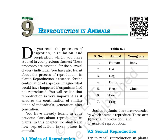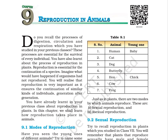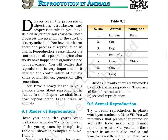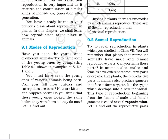Audiobook Science, Class 8, Page 100. Chapter 9: Reproduction in Animals. Do you recall the processes of digestion, circulation and respiration, which you have studied in your previous classes? These processes are essential for the survival of every individual. You have also learnt about the process of reproduction in plants. Reproduction is essential for the continuation of a species.